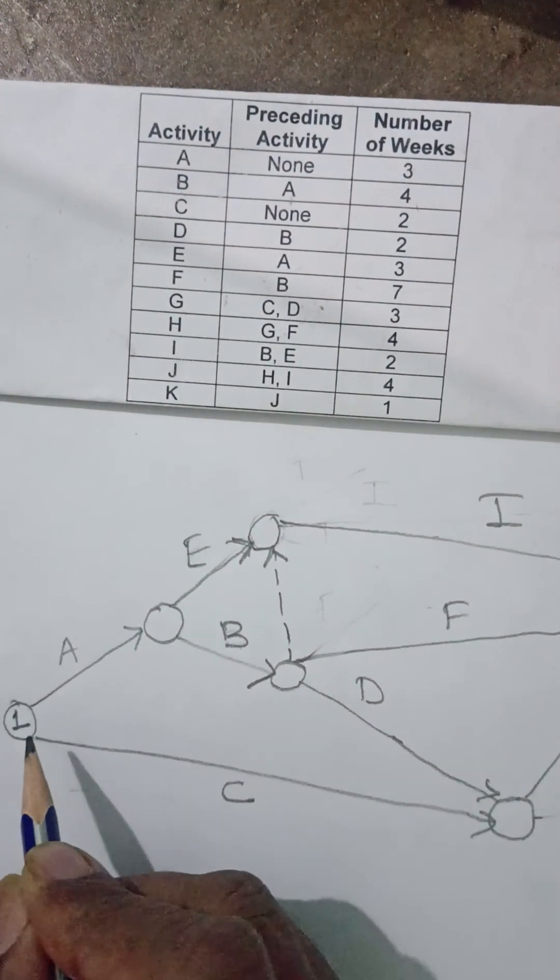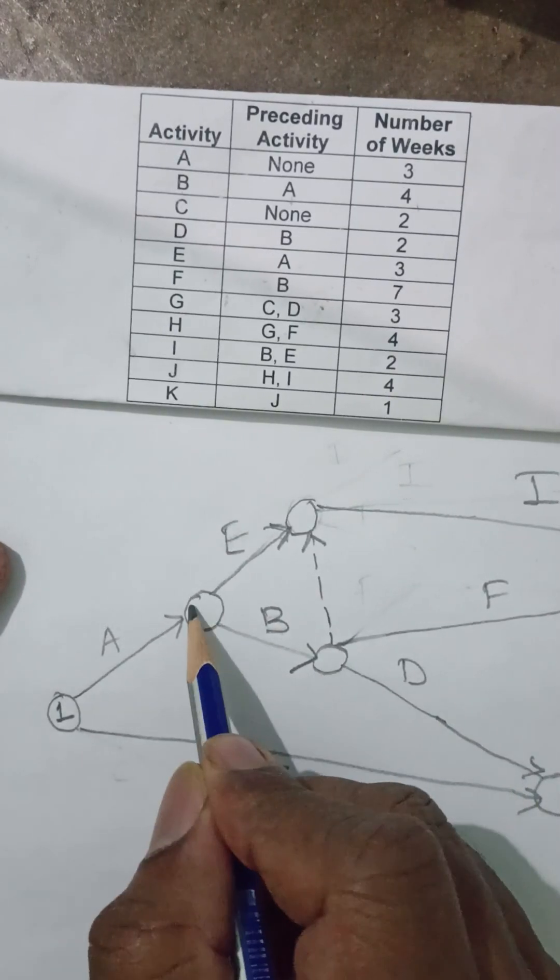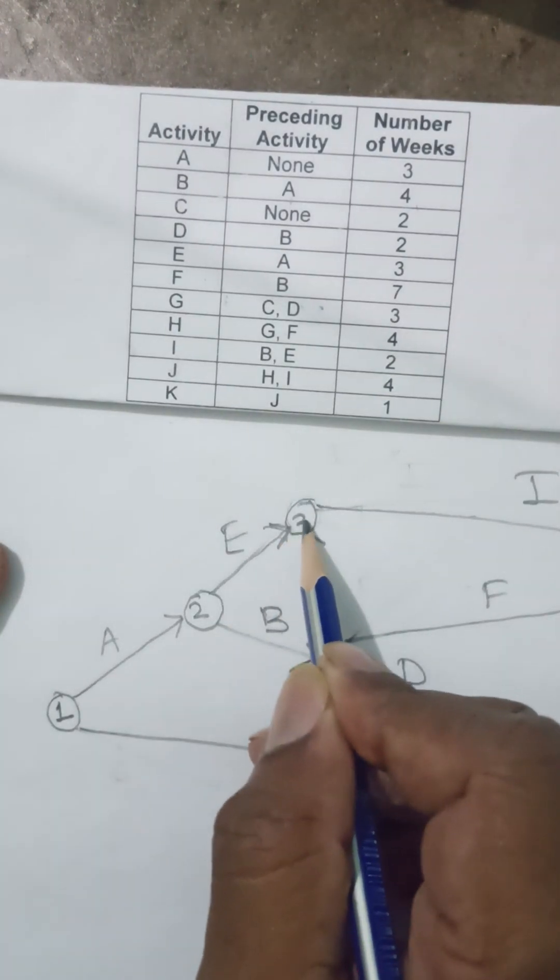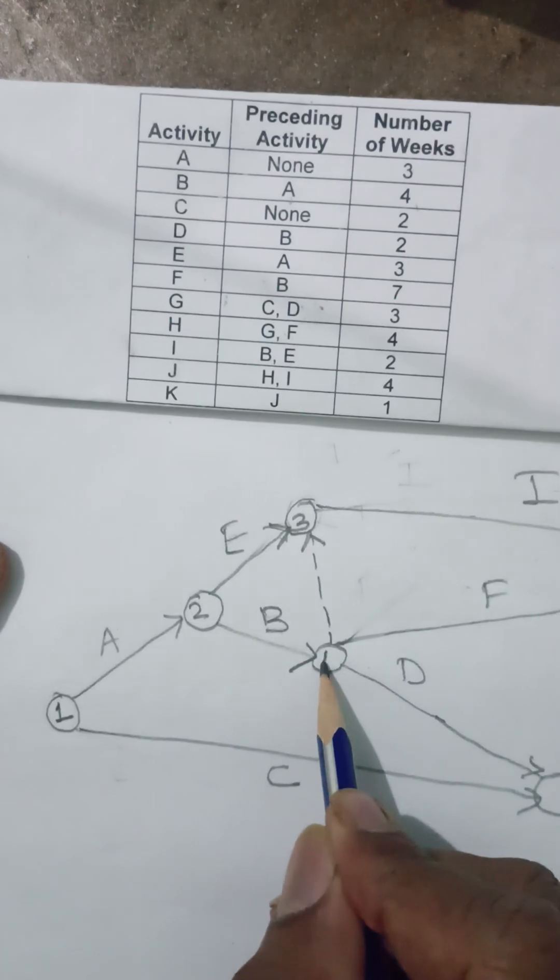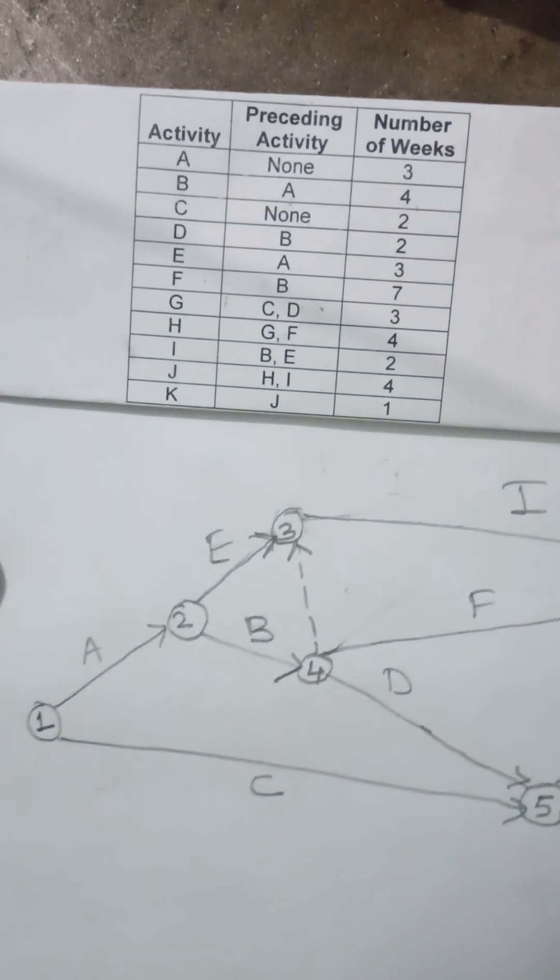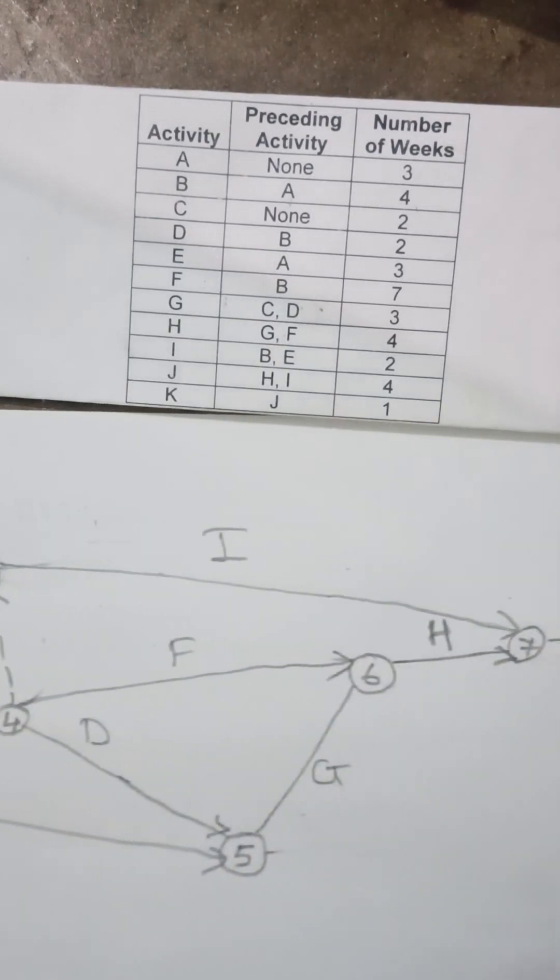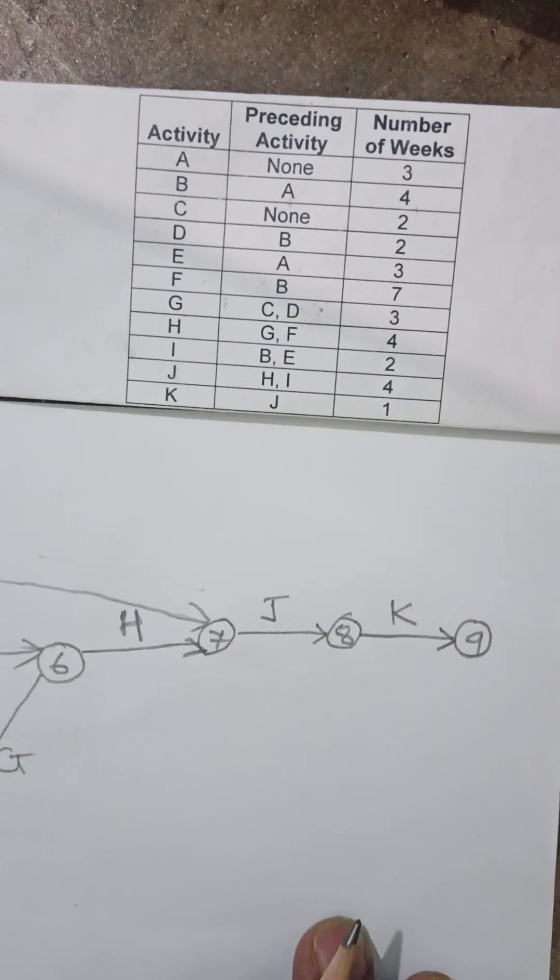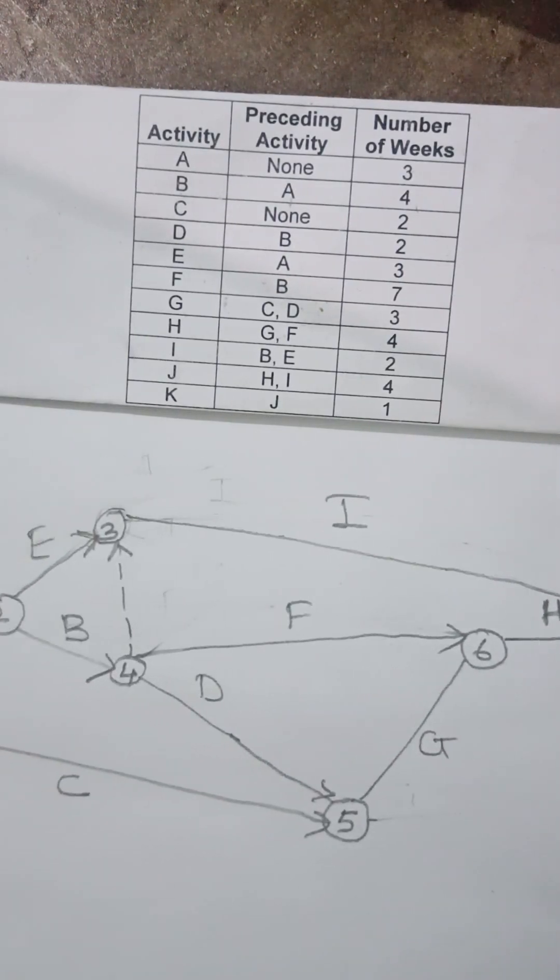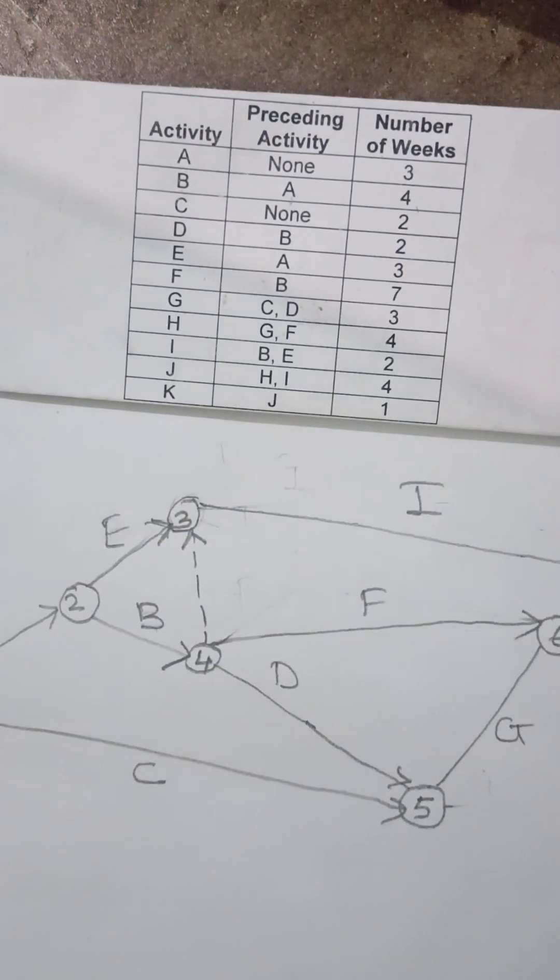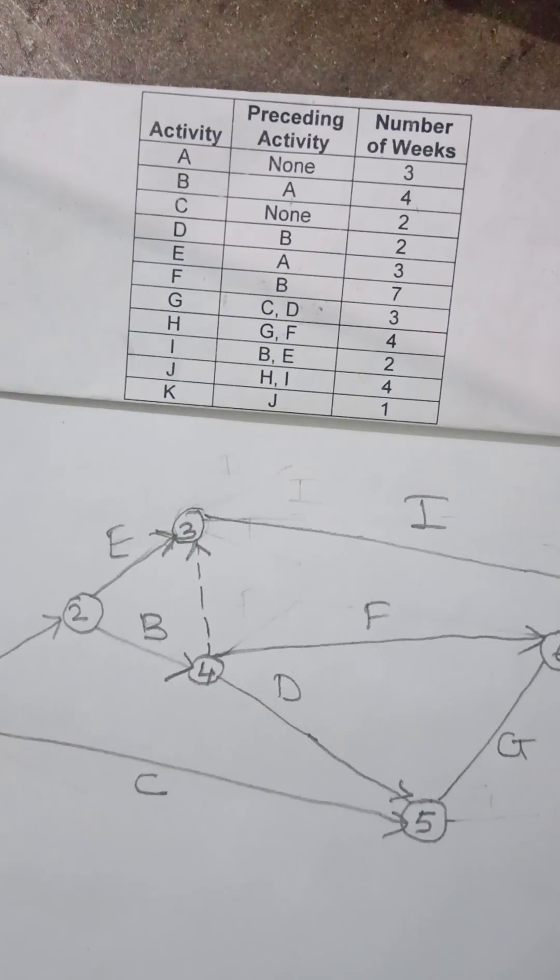Like 1, 2, doesn't matter you follow a different way, 3, 4, 5, 6, 7, 8, and 9. This is how I have given my numbers. This is my AOA network diagram.